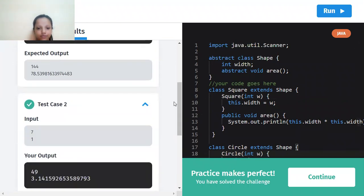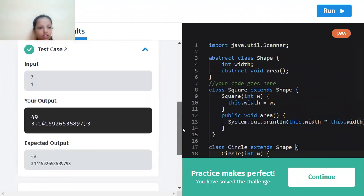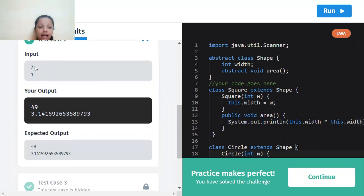The test case two: the first one, it will be 7, and as we know 7 squared is 49. And for the input of the circle it is 1, so pi into 1 into 1 will be 3.141592653589793.